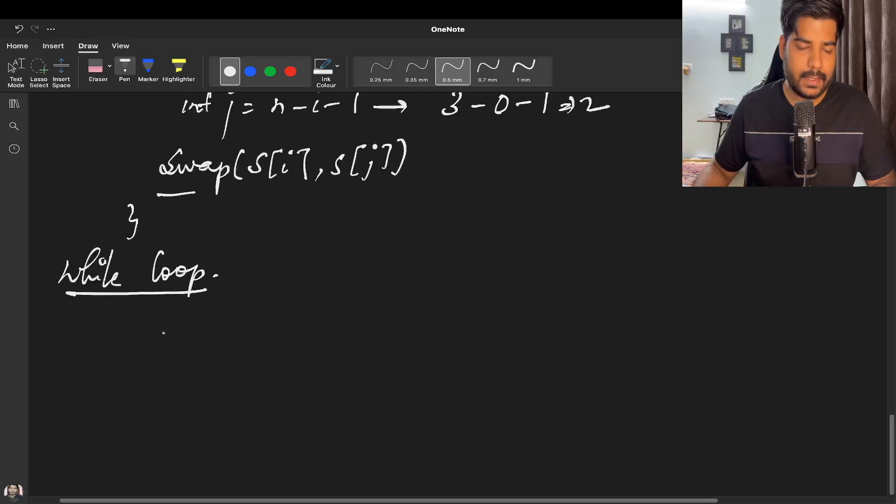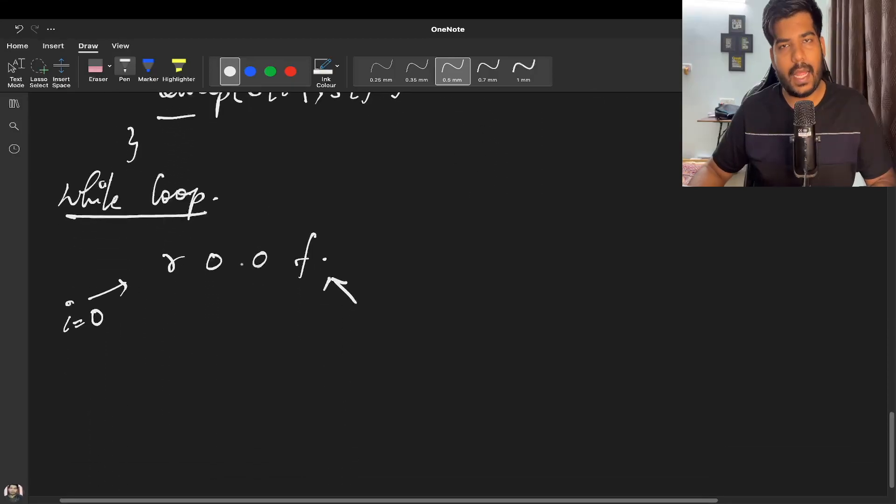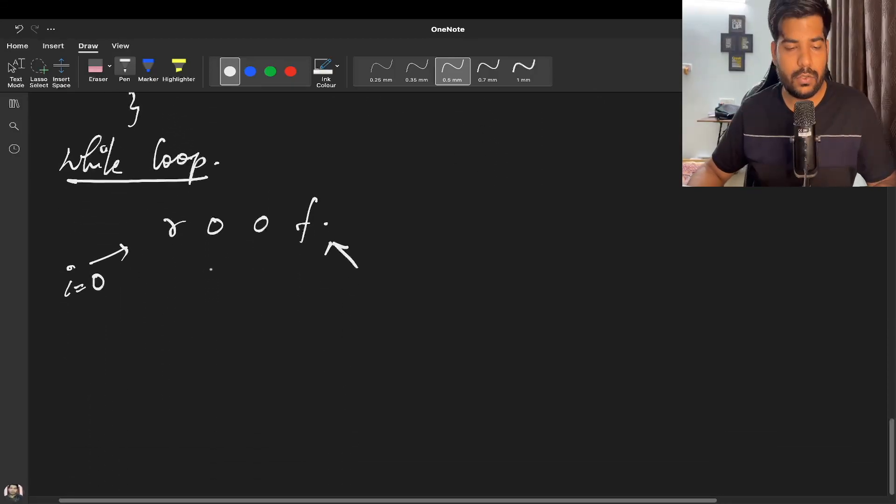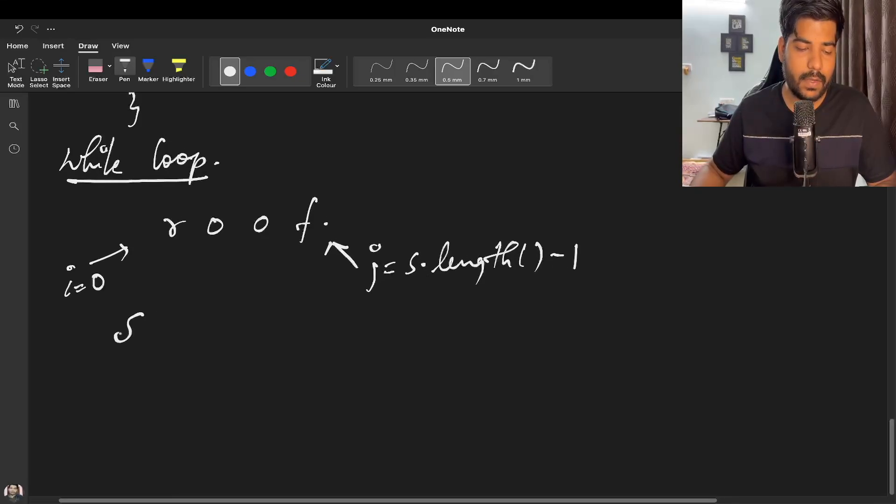For the while loop, let's take an even example. I will be pointing at zero, and we'll have a j pointer. In the while loop, you can also implement the same formula - iterate till i less than n by two - but here I'll teach you a two-pointer technique. Let's say j is at the last index: j equals s.length minus one. Now we can swap s[i] and s[j].